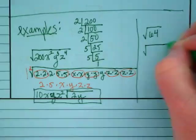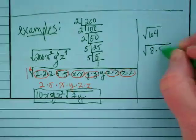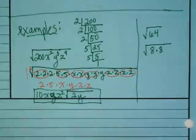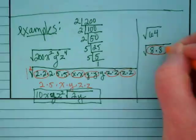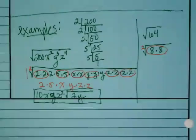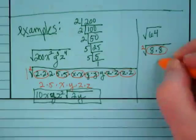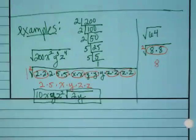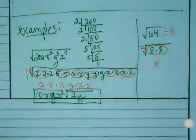To do step one, we're going to write this as eight times eight. We're going to circle them as a pair. Why is it a pair? Because our index is two. We're going to pull out one eight, and there's nothing left inside, so the radical symbol disappears. You guys already knew that this was equal to eight. We're just showing it with the steps you've just learned.